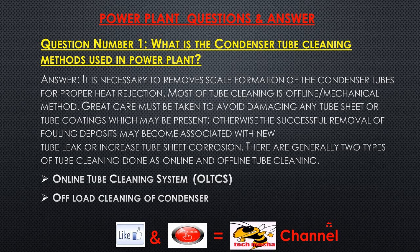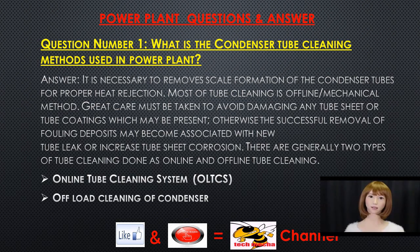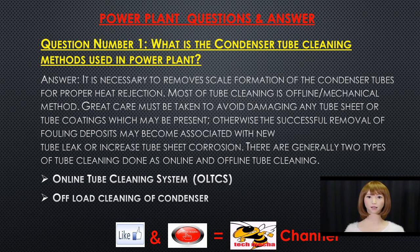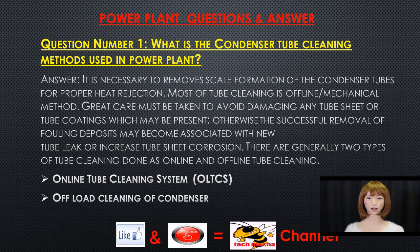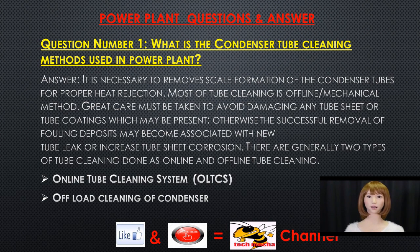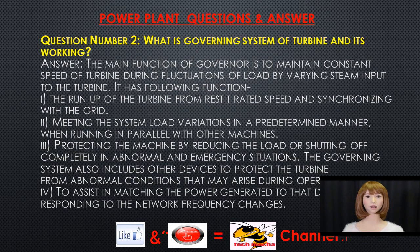Question number one: what are the condenser tube cleaning methods used in a power plant? It is necessary to remove scale formation from condenser tubes for proper heat rejection. Most tube cleaning is done offline by mechanical methods. Great care must be taken to avoid damaging tube sheets or coatings, as fouling removal may otherwise cause new tube leaks or increased tube sheet corrosion. There are generally two types: online and offline tube cleaning.